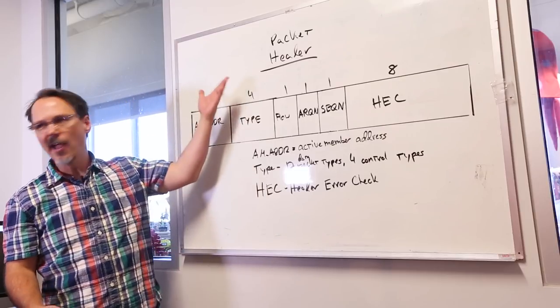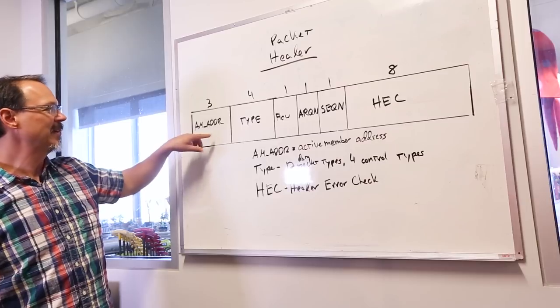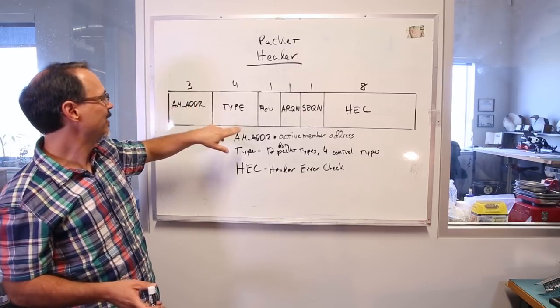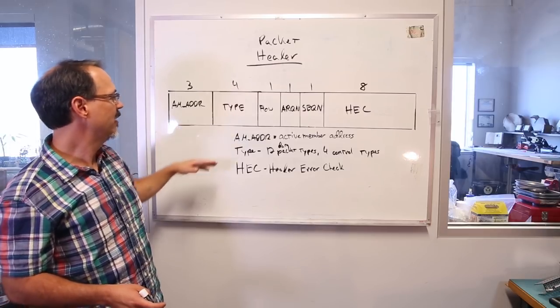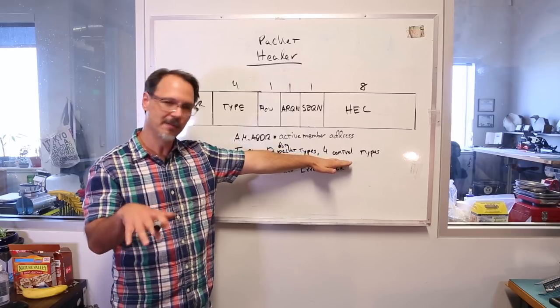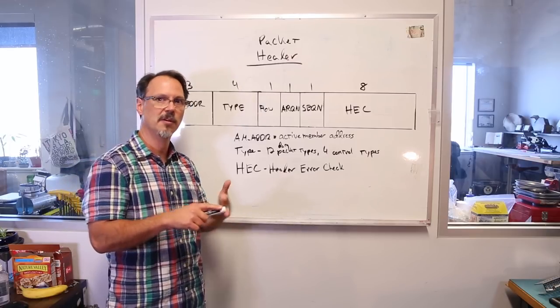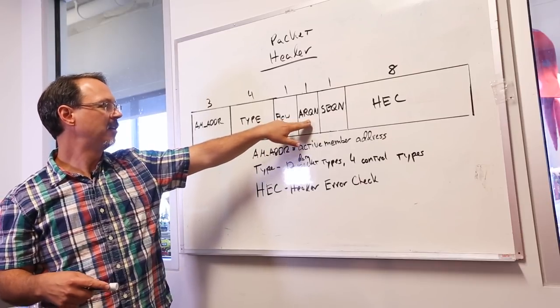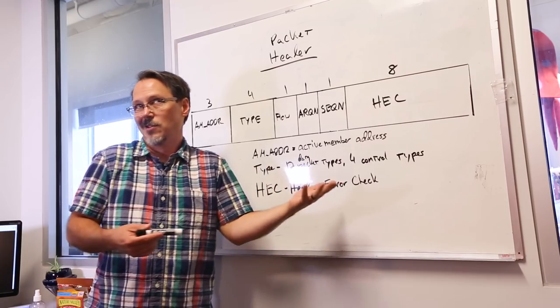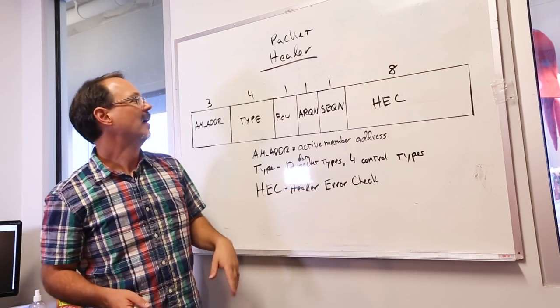So, the next section is the packet header section. Now, that breaks down like this. You've got the active member address that takes up 3-bits, and this is 3-bits because you've got one master and 7 slaves. 3-bits, 7, get it? So, that's who we're talking to. The type of packet is indicated here, and that's 4-bits, and there are 12 types of data packets, and there are 4 control packets, 4 types of control packets. And, these 12 different kinds of data packets are for both ACL and SCO types of exchanges. Then, you've got flow control, 1-bit, ARQN, which is basically an acknowledge bit, and then you've got a sequence bit, 1-bit to determine the sequence. And then, you've got the HEC, the header error check. So, basically a CRC sort of thing. And that's the packet header section.